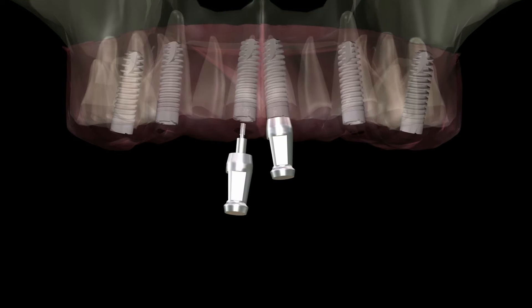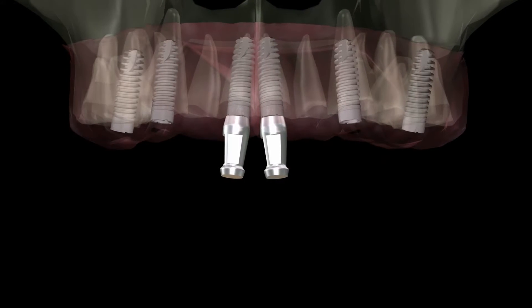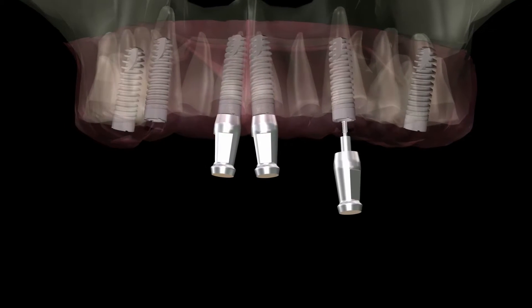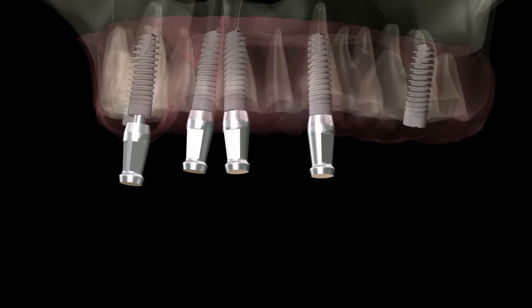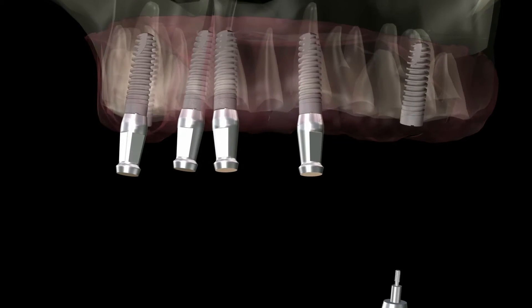With a specifically designed implant coping, the practitioner can simply make the impression and direct the laboratory to angle correct all intended abutments for next appointment delivery. To begin the process, screw the specifically designed one-piece non-engaging impression coping into each implant.